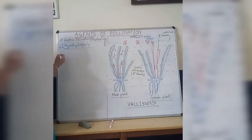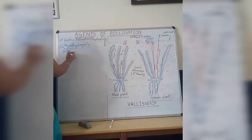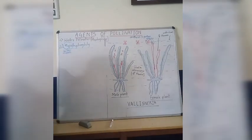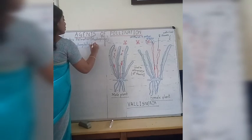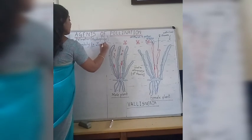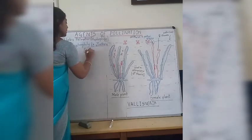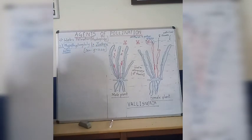Moving on to the next subtype in water pollination: hypohydrophily. 'Hypo' means below, and 'hydrophily' means water pollination — so the pollination takes place below the surface of the water. The example we are going to study is Zostera, also known as seagrass. It is a marine form found in the sea.